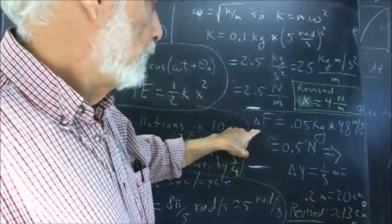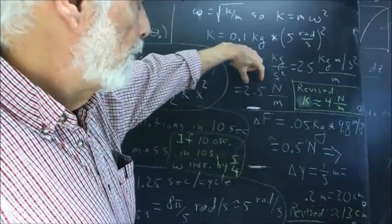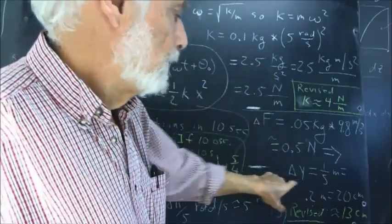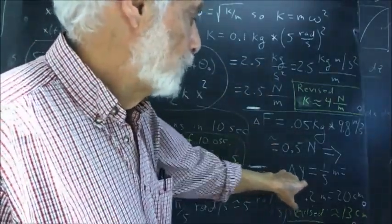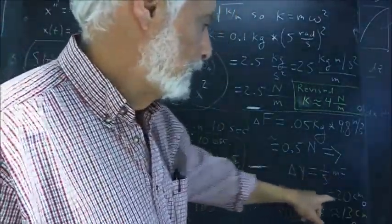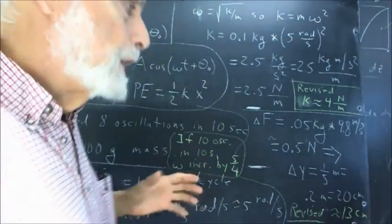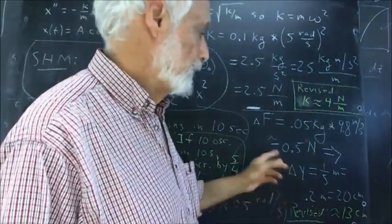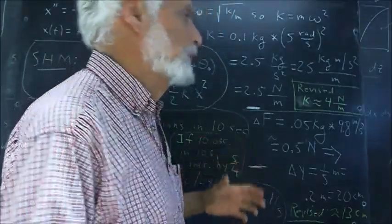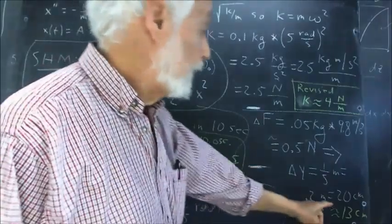If we have a linear response of the rubber band chain to the stretching force, then the 0.5 newton change in the force, that's one-fifth of the force that it takes to stretch this out by a meter. So we would expect the change in the length, the delta y in this direction, to be one-fifth of a meter, which is two-tenths of a meter or 20 centimeters.